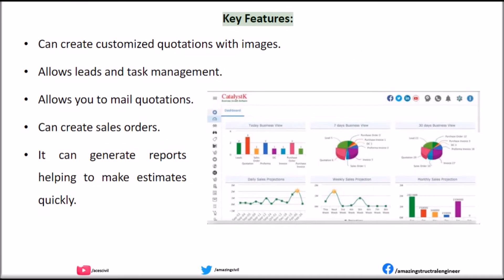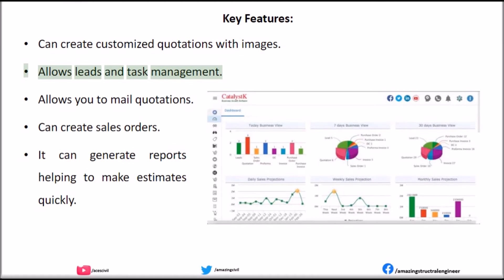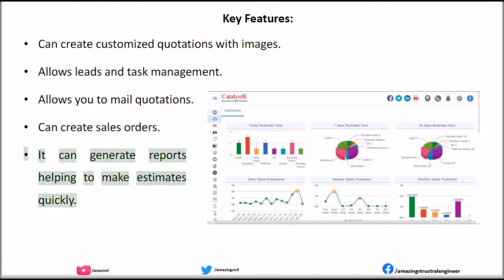Key Features of Catalyst-K: Can create customized quotations with images. Allows leads and task management. Allows you to mail quotations. Can create sales orders. Can generate array reports helping to make estimates quickly.